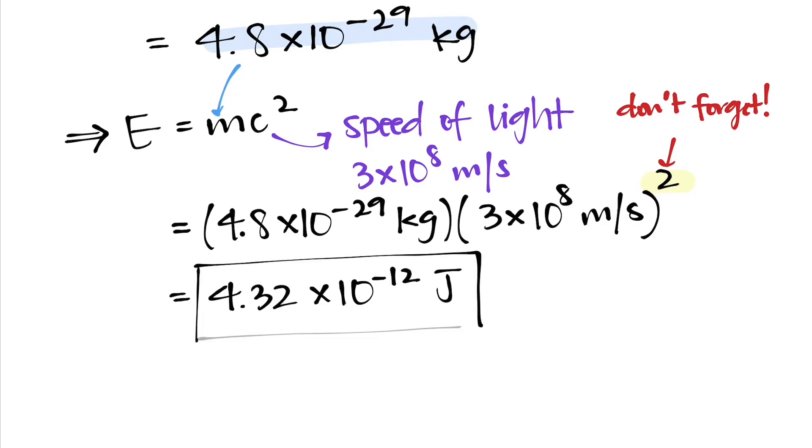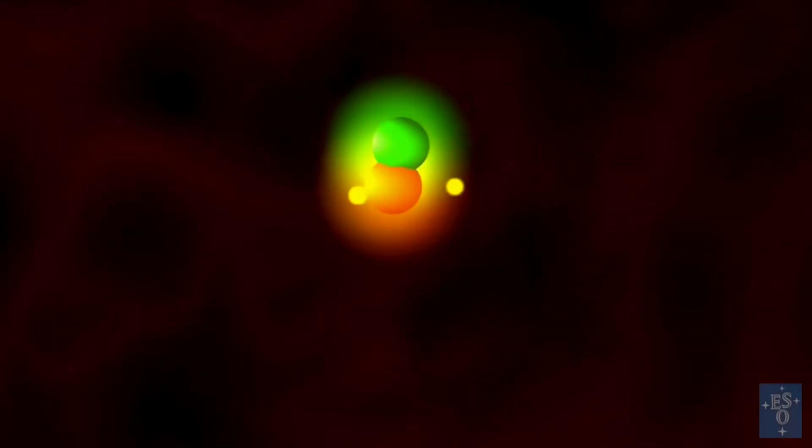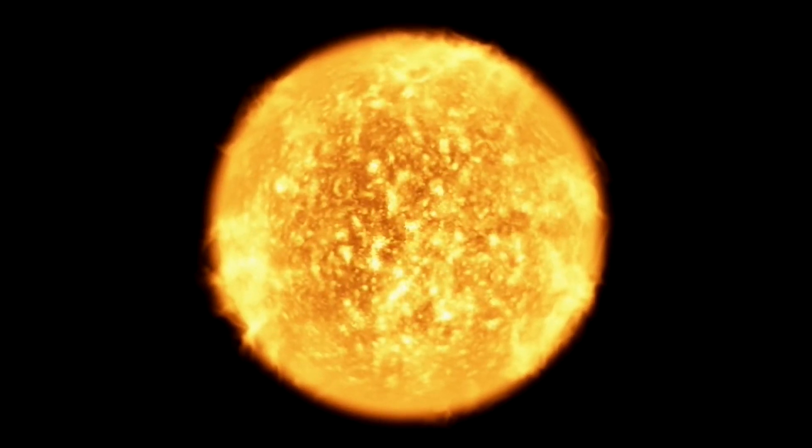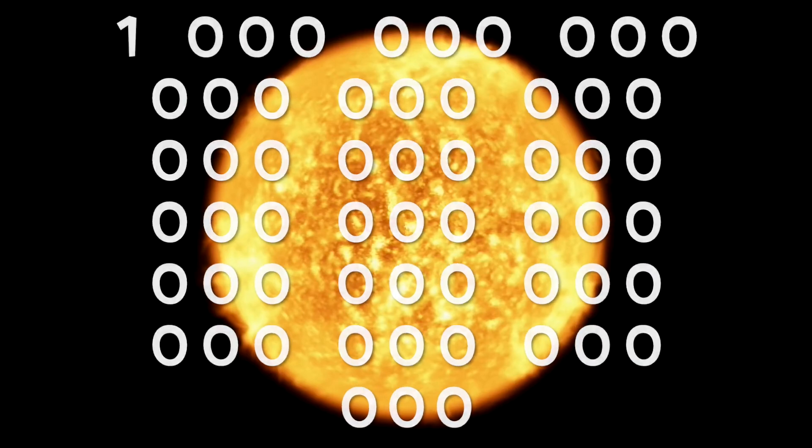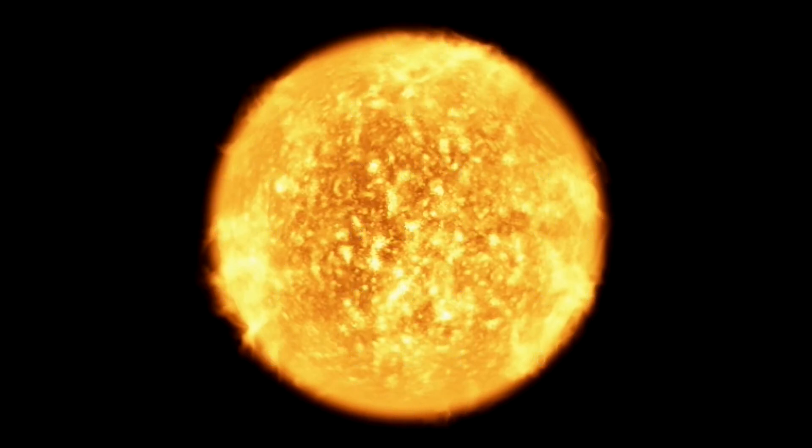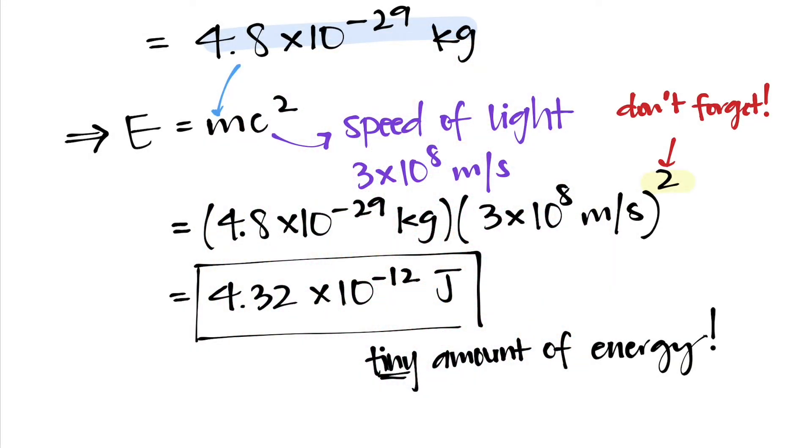which gives us a value of 4.32 times 10 to the power of negative 12 joules. That's a really tiny amount of energy, but that's only for one hydrogen to helium fusion process, where we've taken four hydrogen atoms and created one helium. And keep in mind, there are 10 to the power of 57 atoms of hydrogen in the Sun. That's a one followed by 57 zeros of hydrogen atoms, all of which are in turn fusing into helium,